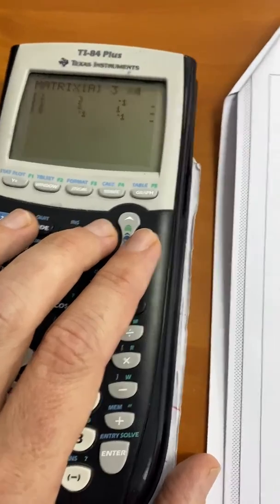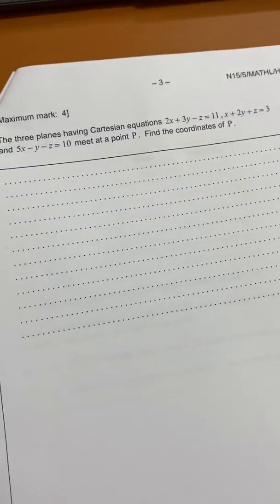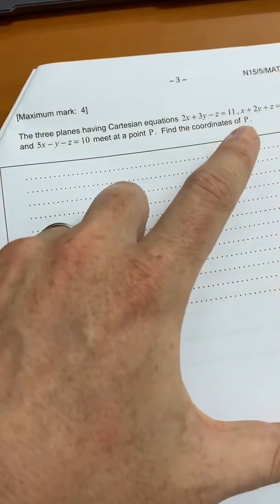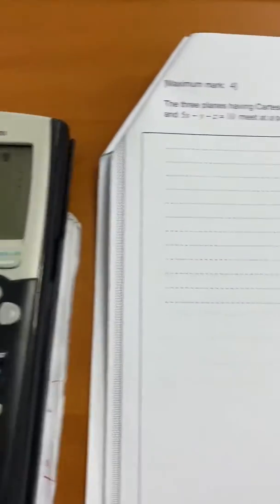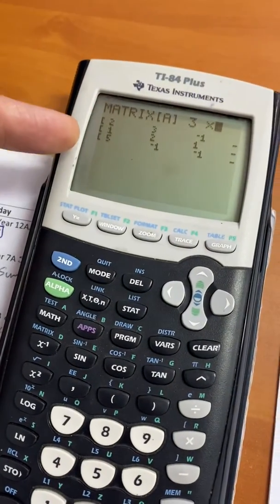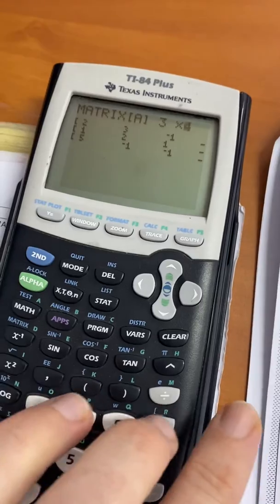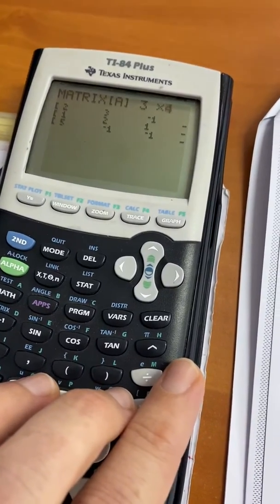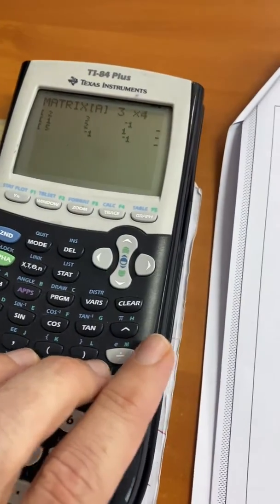Then fill in the numbers, so you get the numbers from here. The x column would be two, one, five, two, one, five. Okay, and follow right to the answer column. Once you've done that, get out of that, second quit.